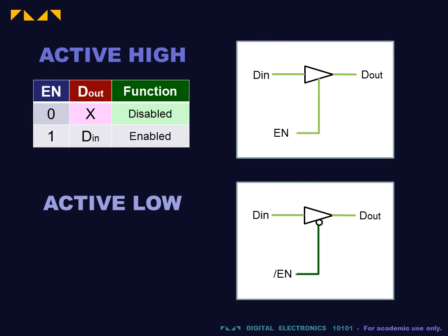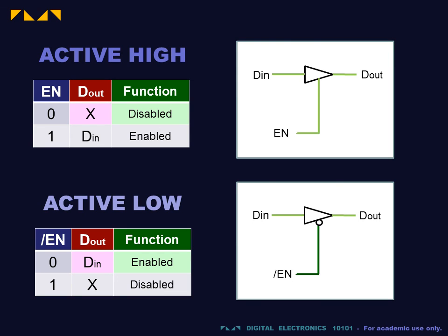There also exists active low level enabling, in which the gate is enabled when the control input is low. We will follow the convention that active low inputs are indicated by two markers: the presence of a bubble at that input, and the labeling of that input with a bar.